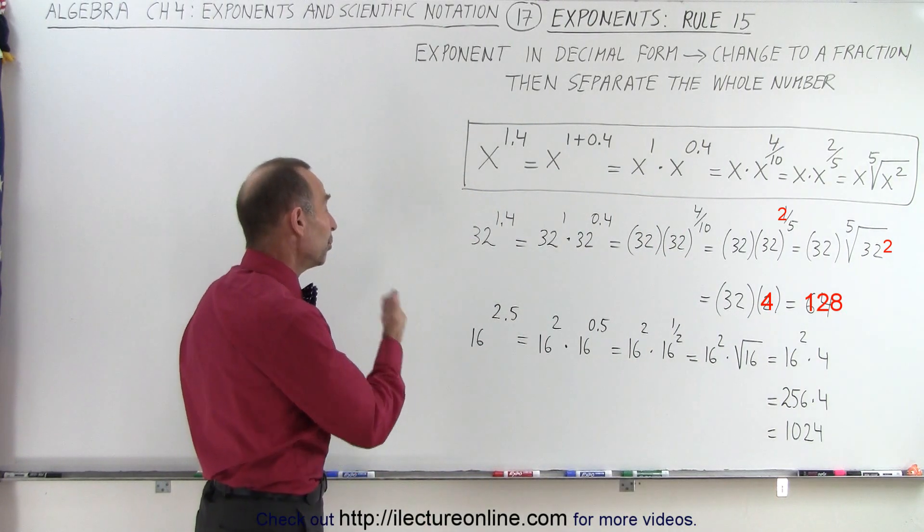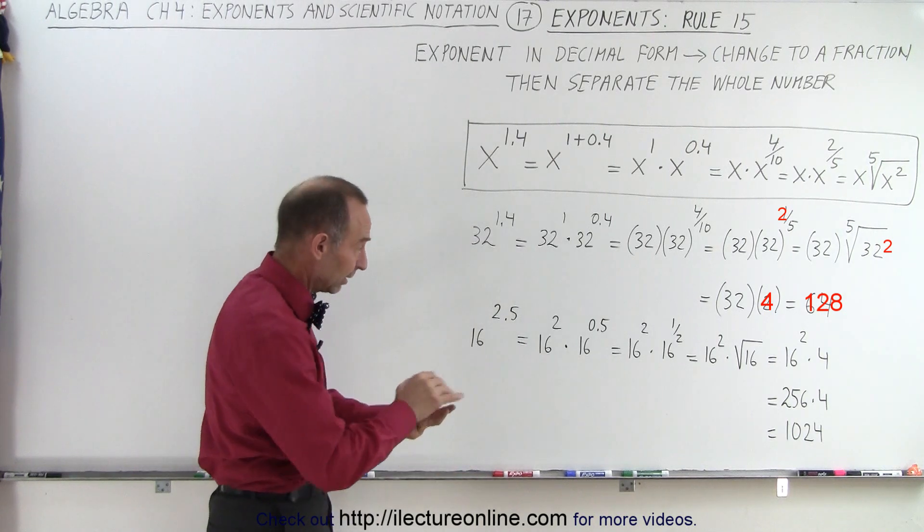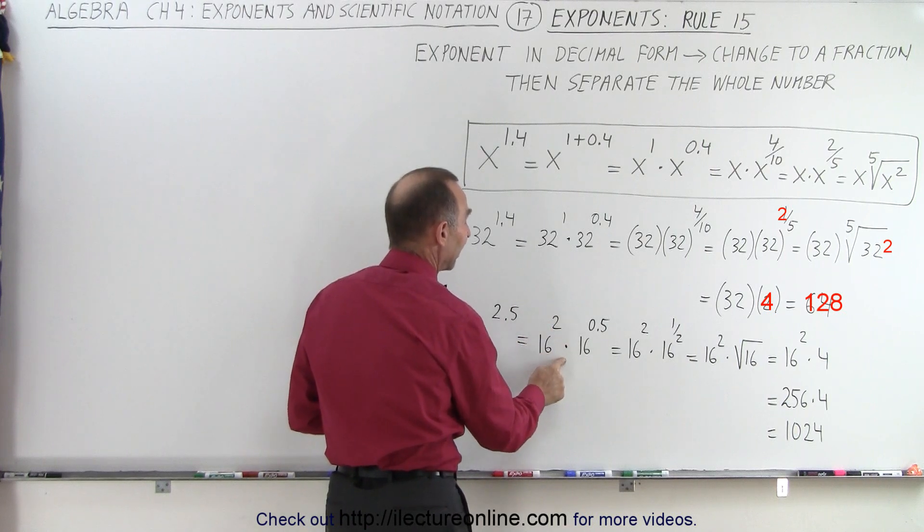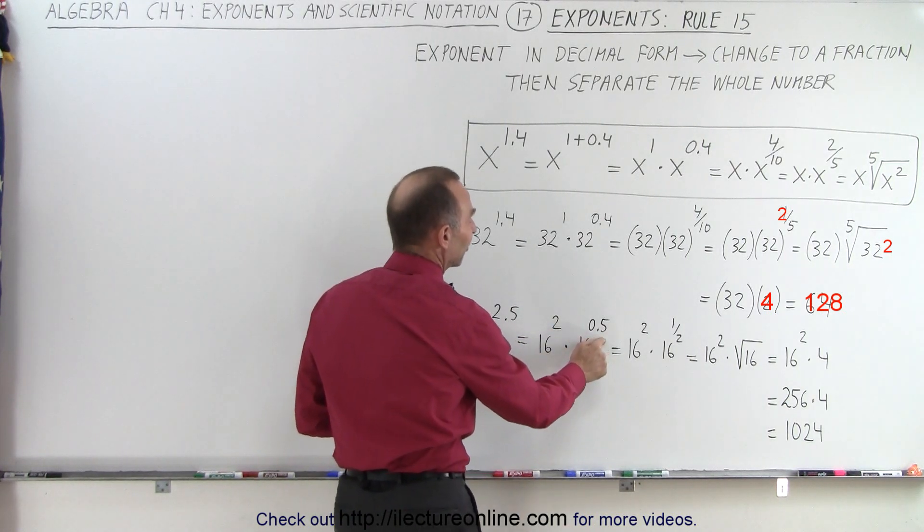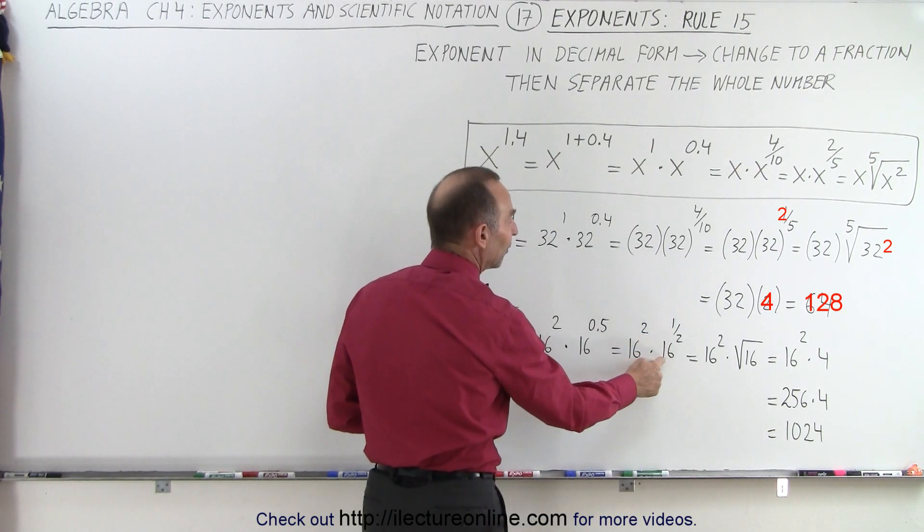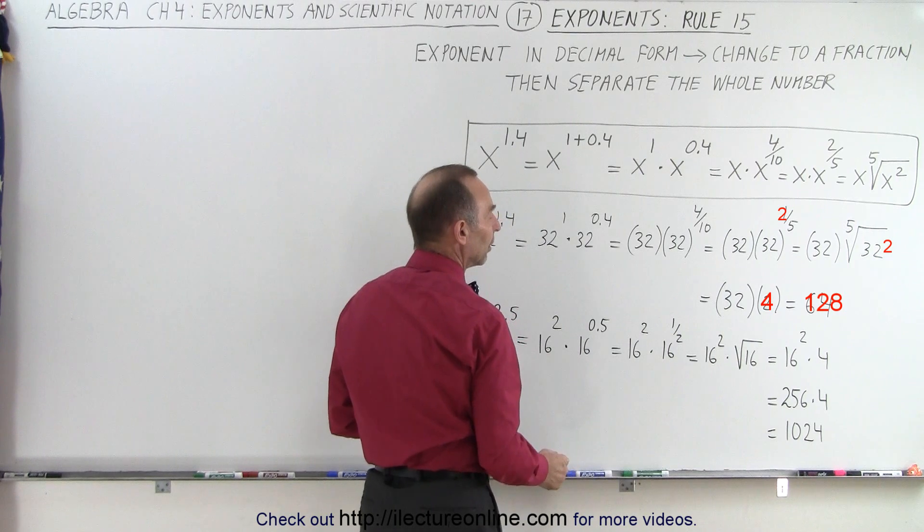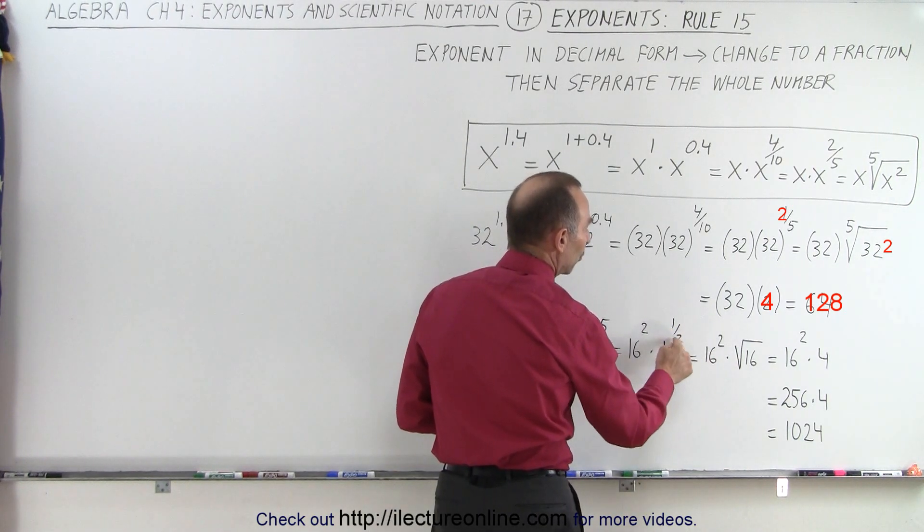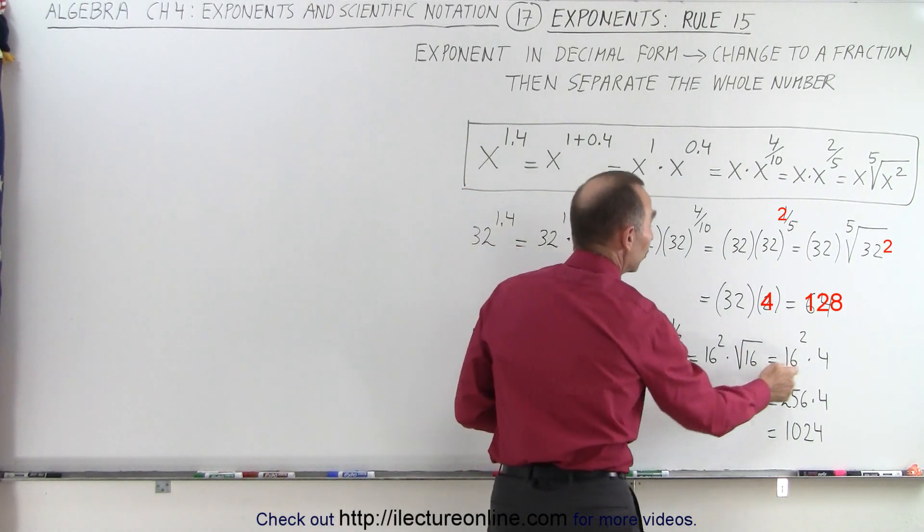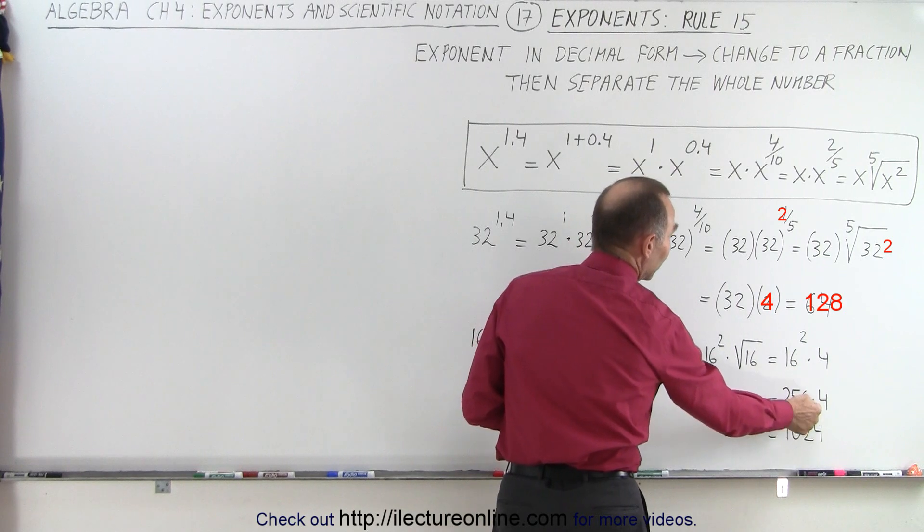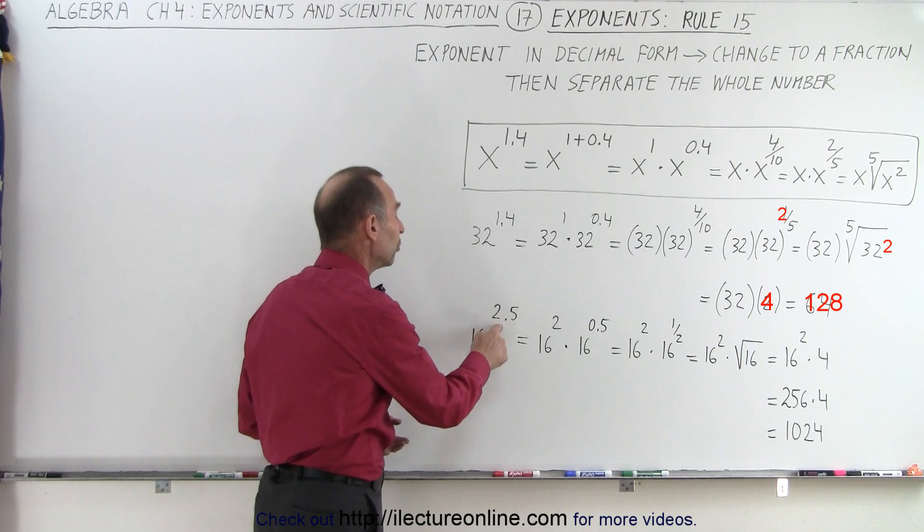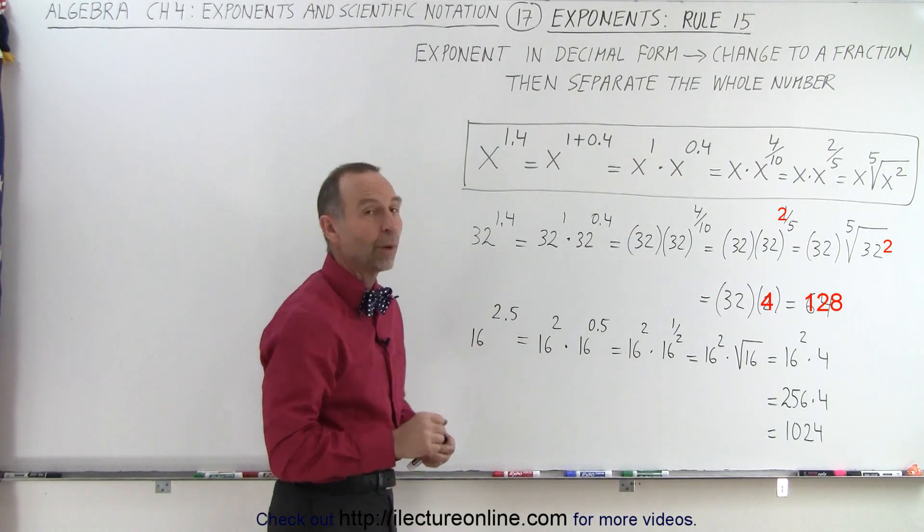How about 16 to the 2.5 power? Again, the temptation is to run to the calculator to see what it is, but actually we can write it as 16 to the second power times 16 to the 0.5 power. 0.5 is the same as 1 over 2, or 1 half, so this gives us 16 squared times 16 to the 1 half power. So this can be written as 16 squared times the square root, because to the 1 half power is the same thing as the square root. The square root of 16 is 4. 16 squared is 256 times 4 gives us 1024. In other words, 16 raised to the 2.5 power equals 1024.